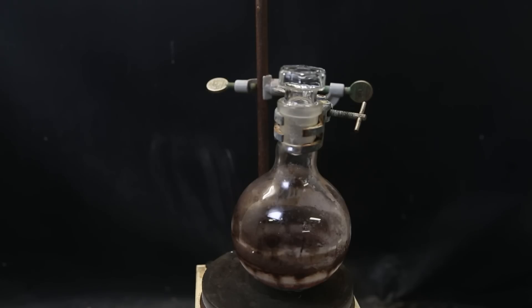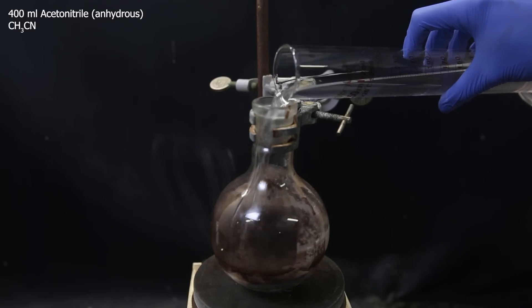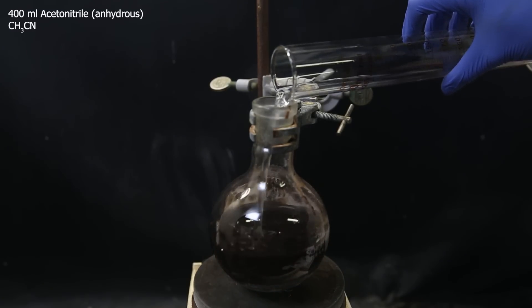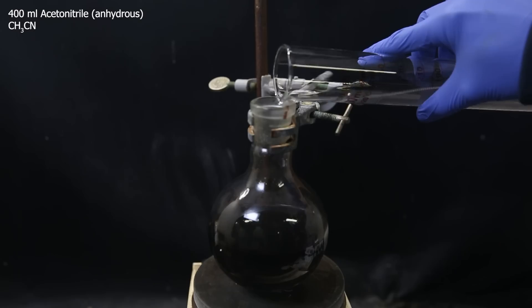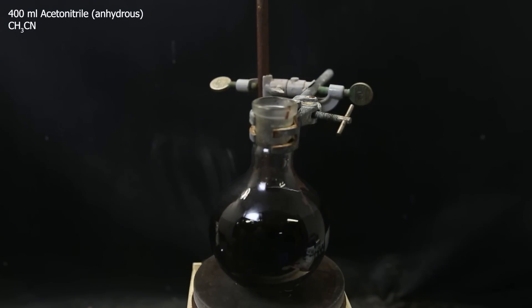After all of that, I allow it to come back to room temperature, and then add in 400 ml of anhydrous acetonitrile as a solvent. This will dissolve the product, while the insoluble black polymeric impurity will stay suspended.